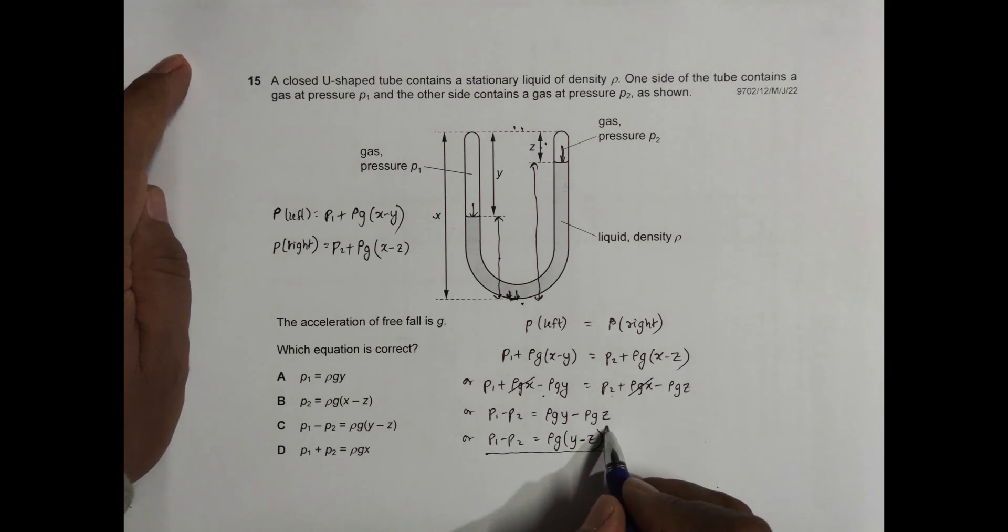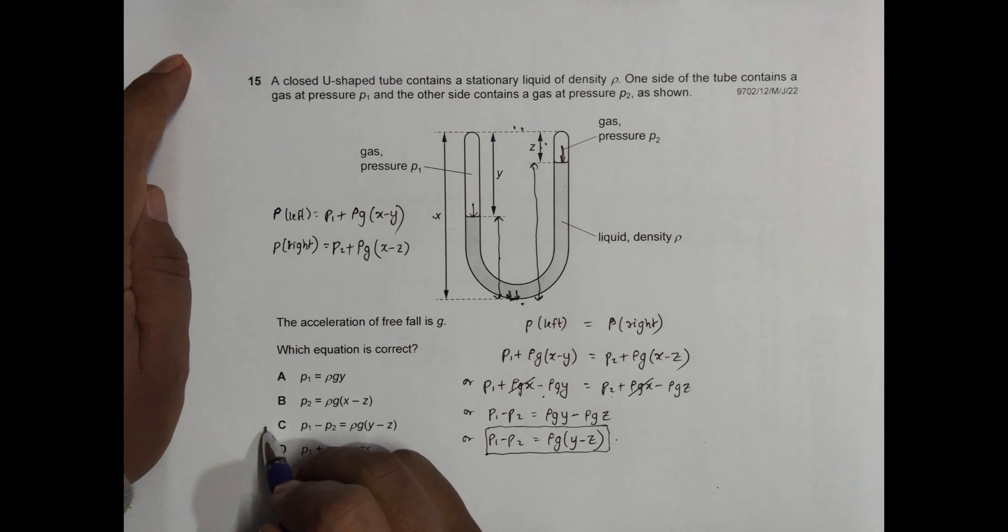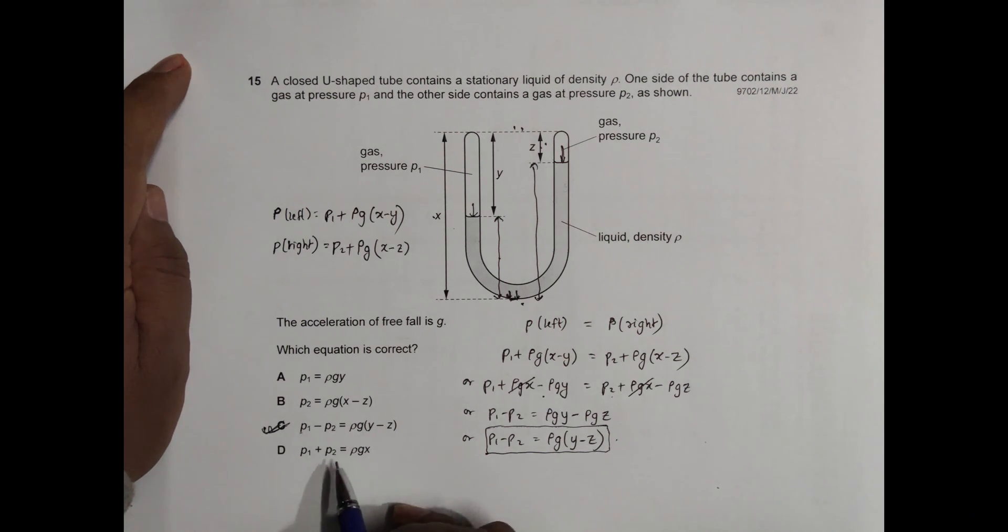So this is the final expression that we get. It shows that our choice number C is the correct choice, and all others should be incorrect because they cannot be obtained at all.